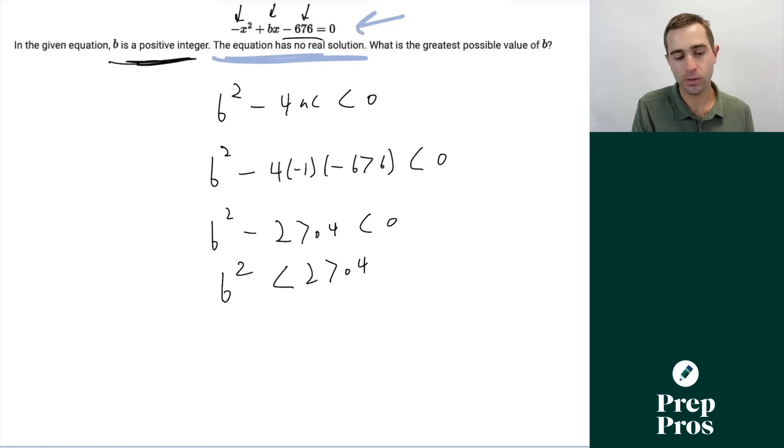Now we'll take the square root of it since it's a positive integer. That tells us that B has to be less than 52. If we're saying, what is the greatest possible value of B, and it's a positive integer, that's going to tell us that it has to be 51 is our correct answer.